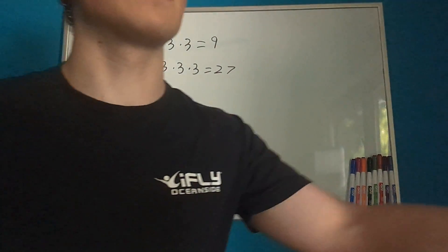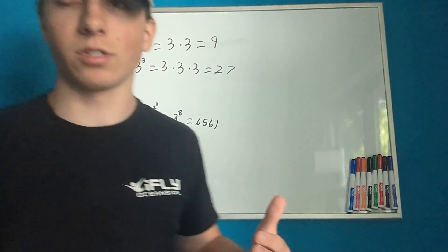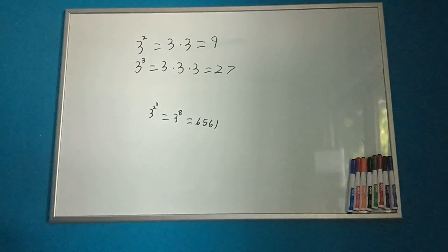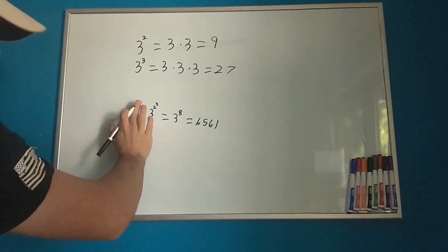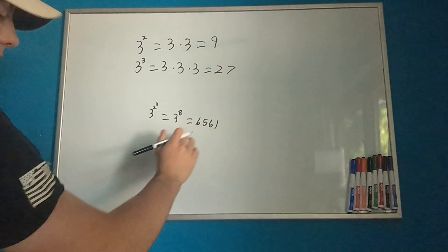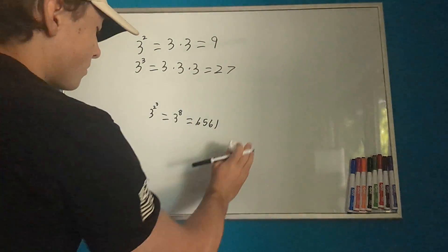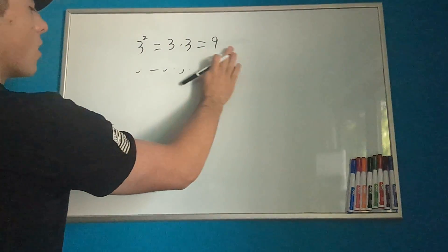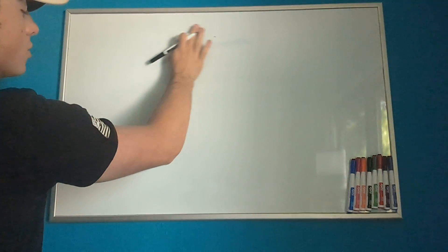So we can already kind of see something that power towers will do, which they'll increase small numbers very, very quickly. I mean, just take a look. This is just a 3, a 2, and a 3, and we got up to 6,561. So let's take a look at tetration notation now.